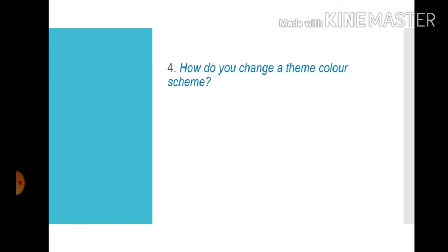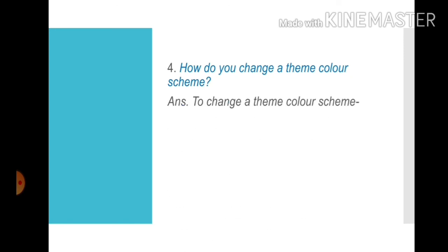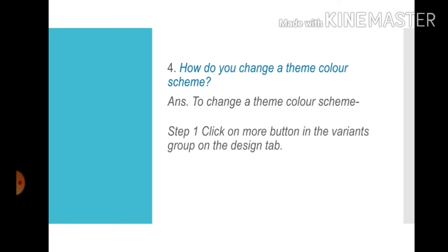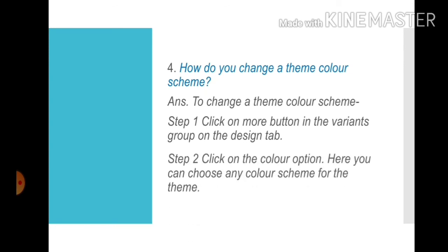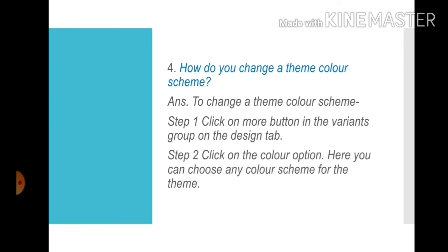Question number four: How do you change a theme color scheme? Answer: To change a theme color scheme. Step one: Click on the More button in the Variants group on the Design tab. Step two: Click on the Color option. Here you can choose any color scheme for the theme.